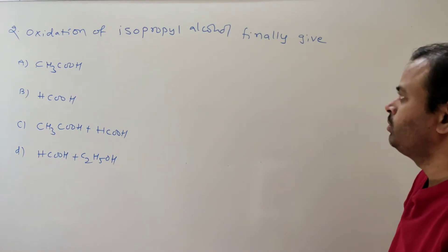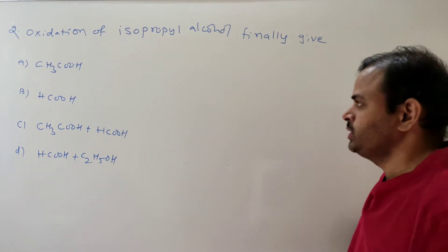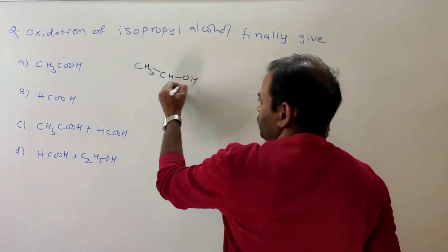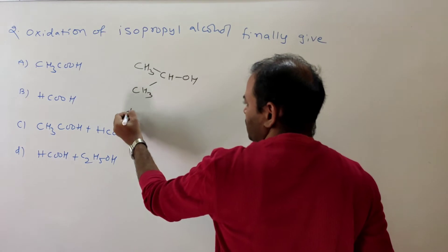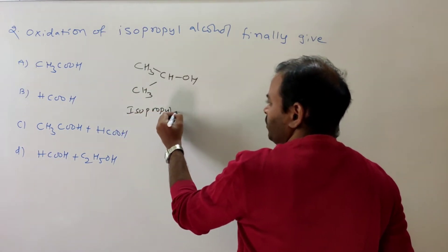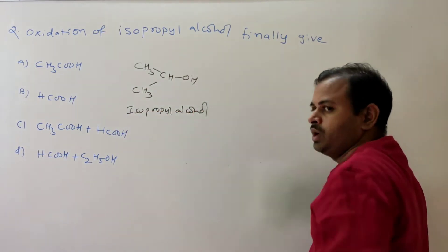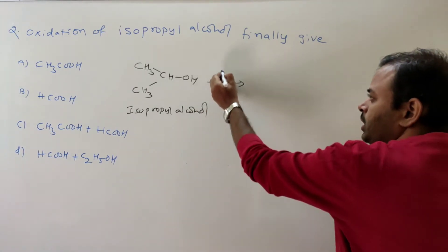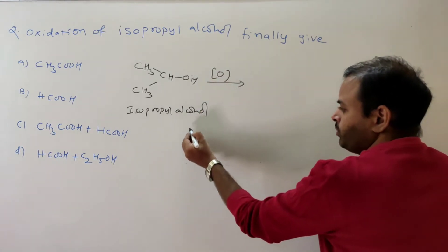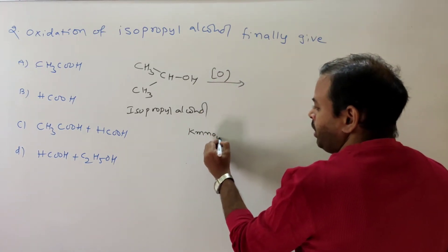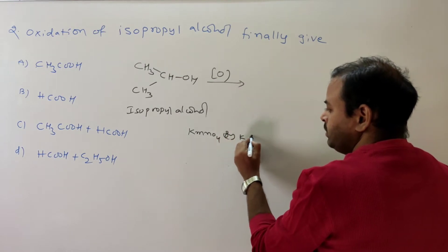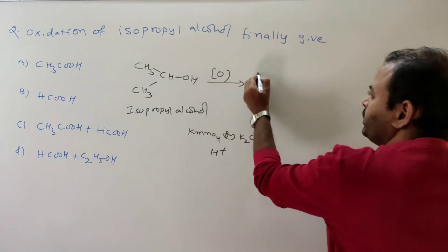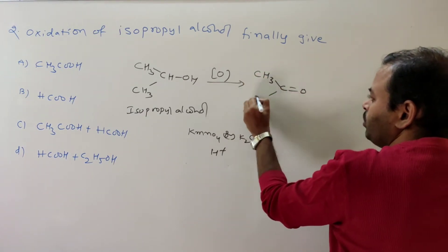Second question: oxidation of isopropyl alcohol finally gives what? Isopropyl alcohol is a secondary alcohol: CH3CHOH(CH3). On oxidation, generally alcohol oxidation takes place in presence of KMnO4 or K2Cr2O7 under acidic (H+) conditions.